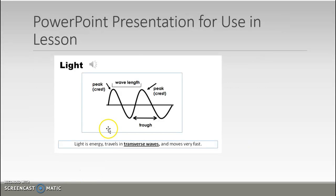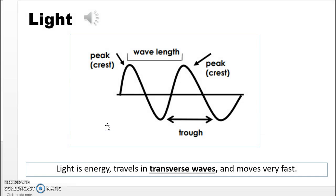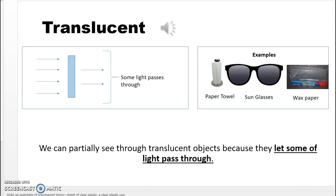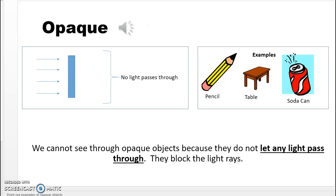Here is the PowerPoint presentation I would use with students. You would start by talking about light, transparent, translucent, and opaque. At each point, you could stop and show students specific examples of items that are transparent, translucent, and opaque.